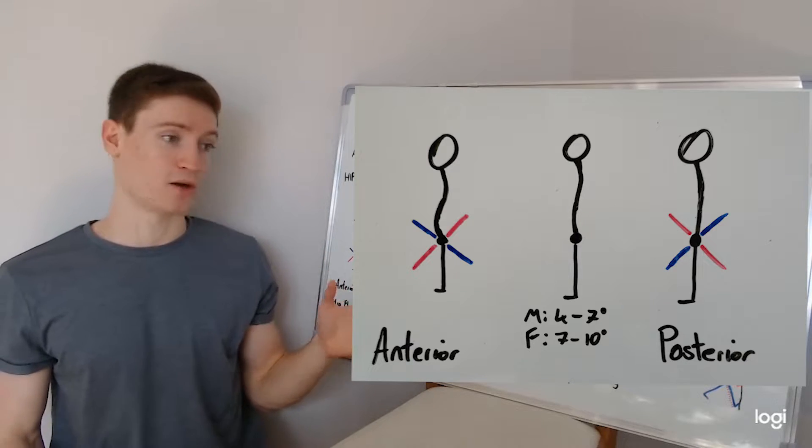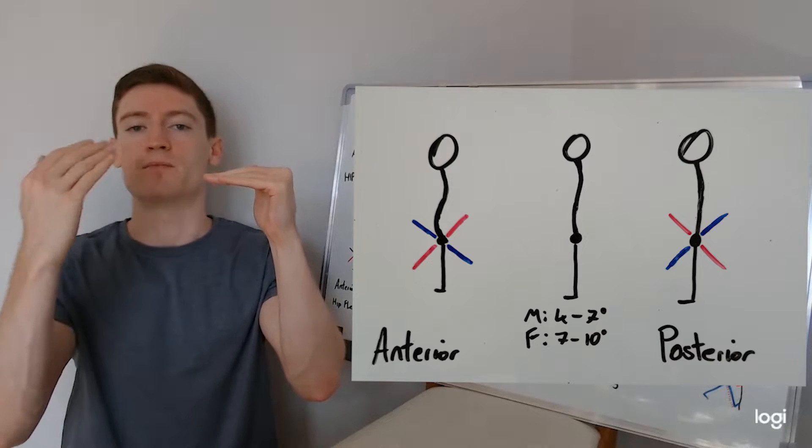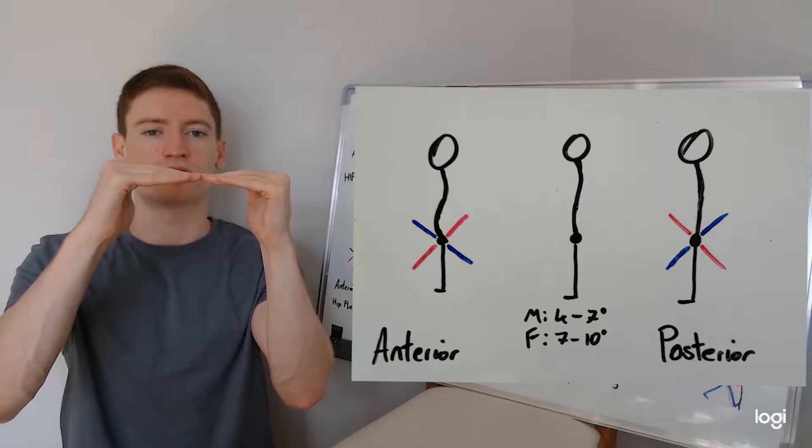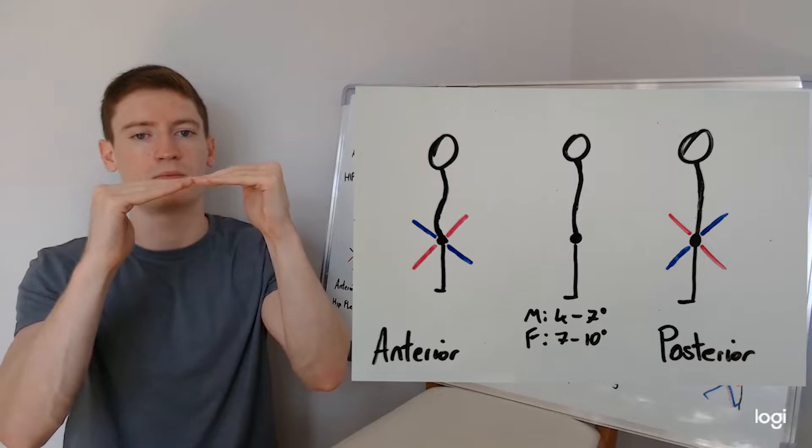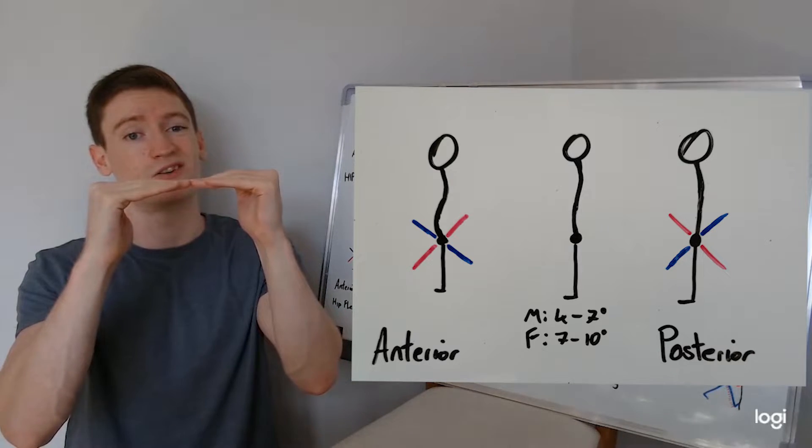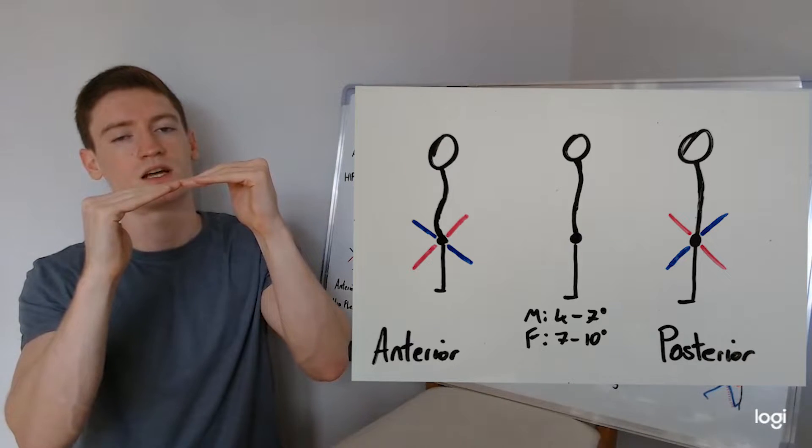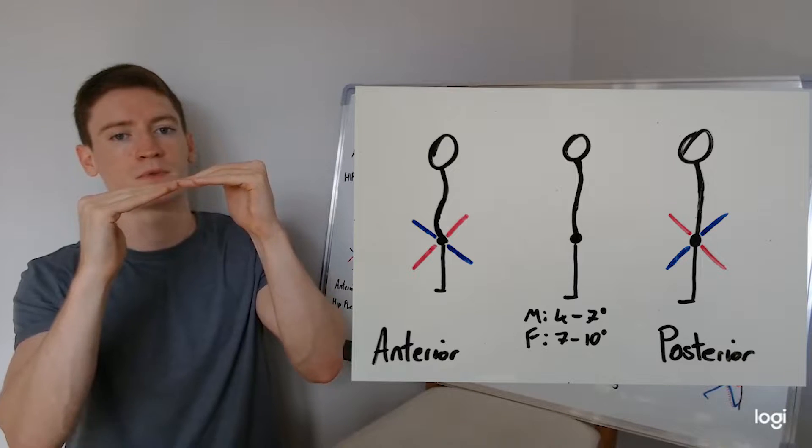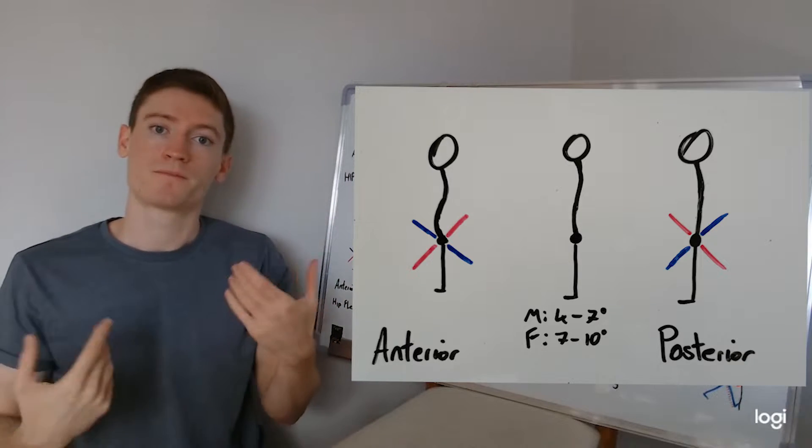Opposite to that, you've got the posterior itself, which would be the opposing motion, where instead of being that four to seven degrees of slight tilt, instead we'd be tucked back under. It could be closer to zero degree of tilt, or you can actually be slightly into a forward posterior tilt. That would be pouring water out the back of the bucket.